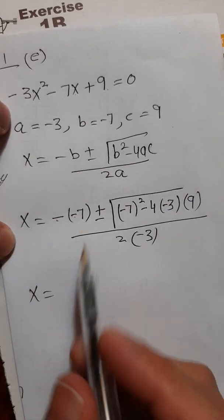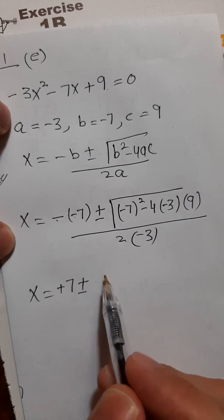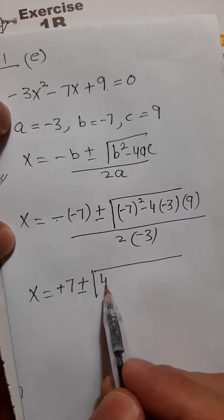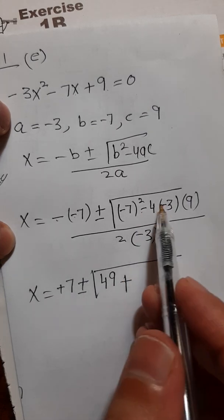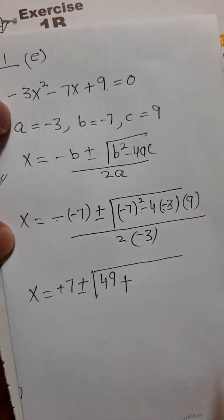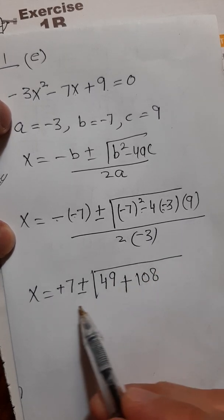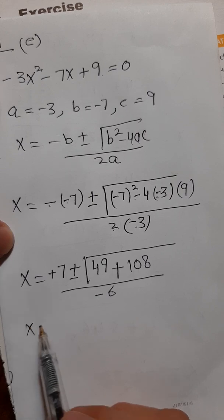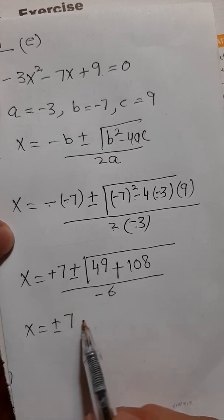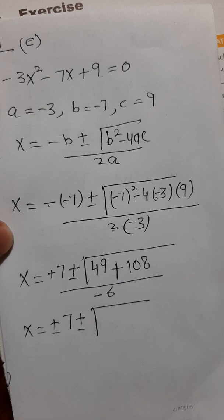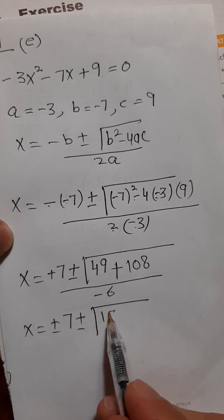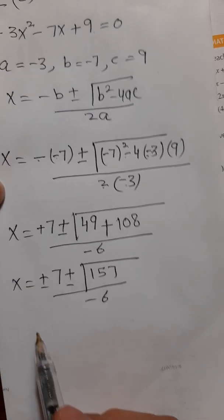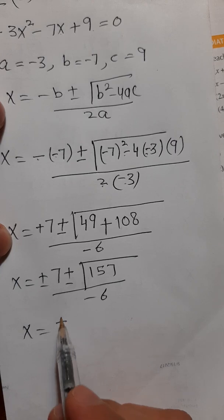Simplifying: minus into minus gives plus 7, plus or minus square root of 49 minus (minus 108). Minus times minus gives plus, so 49 plus 108 equals 157, divided by 2 times minus 3 which is minus 6. So x equals plus 7 plus or minus square root of 157, over minus 6.